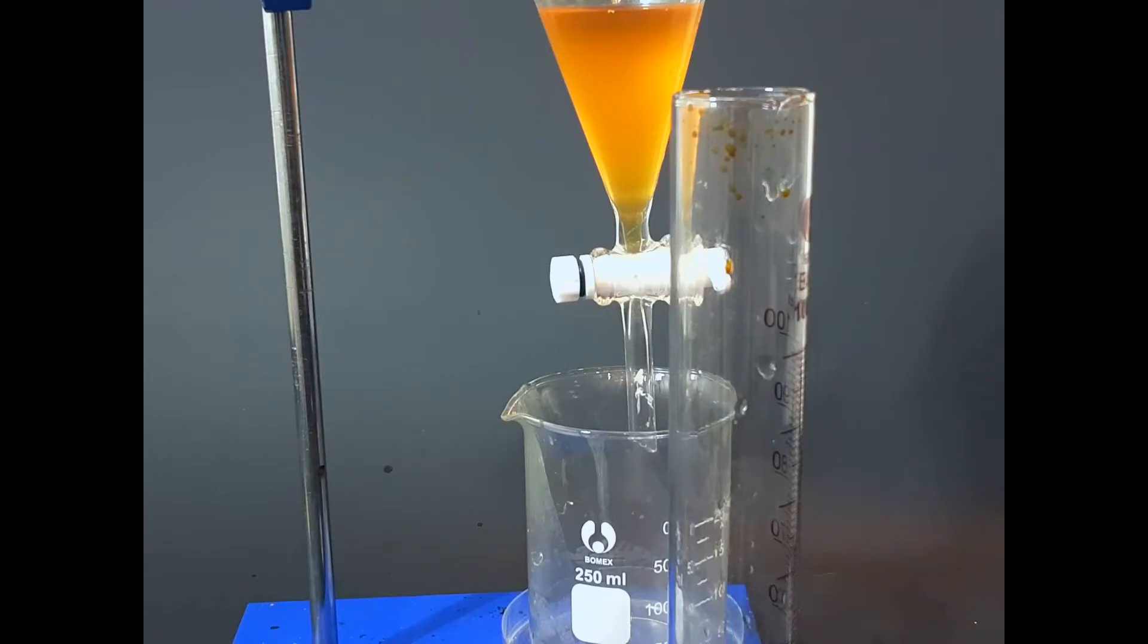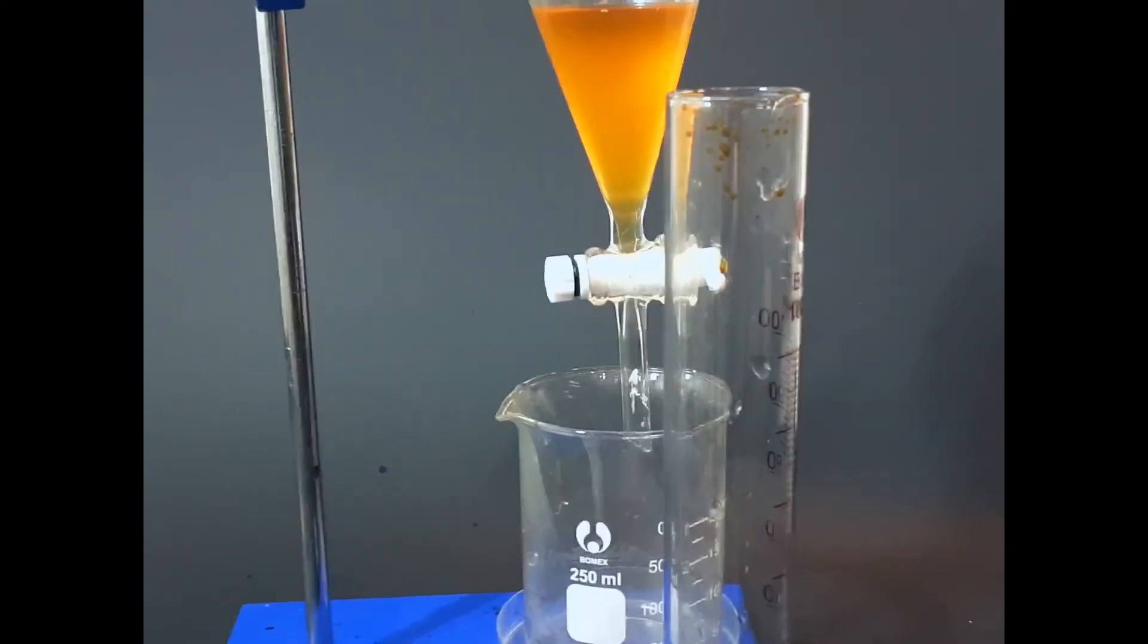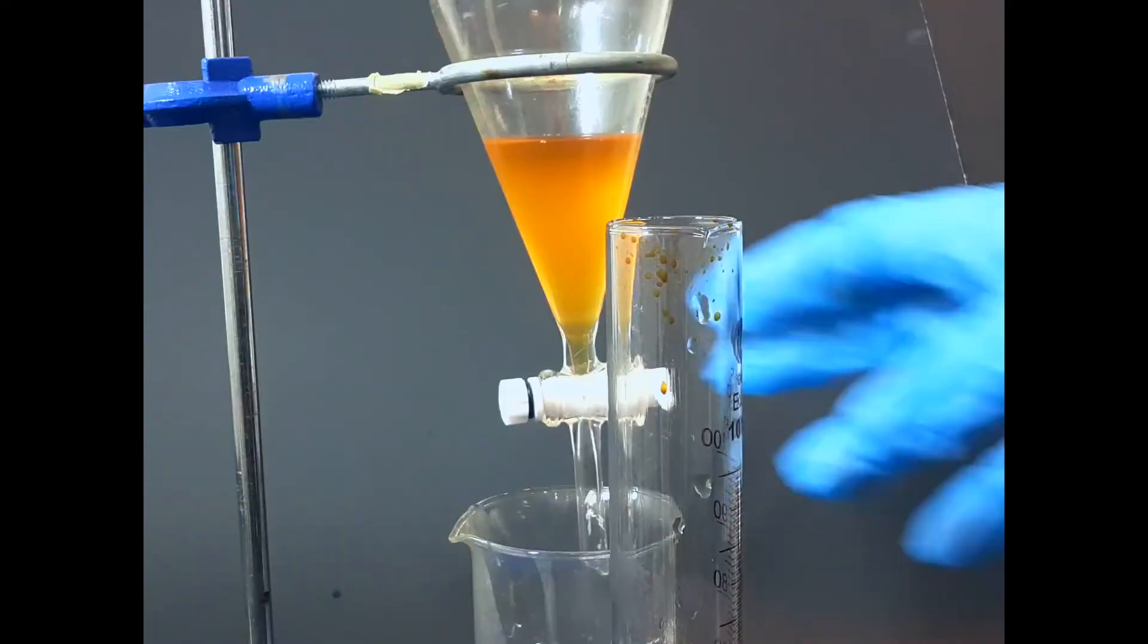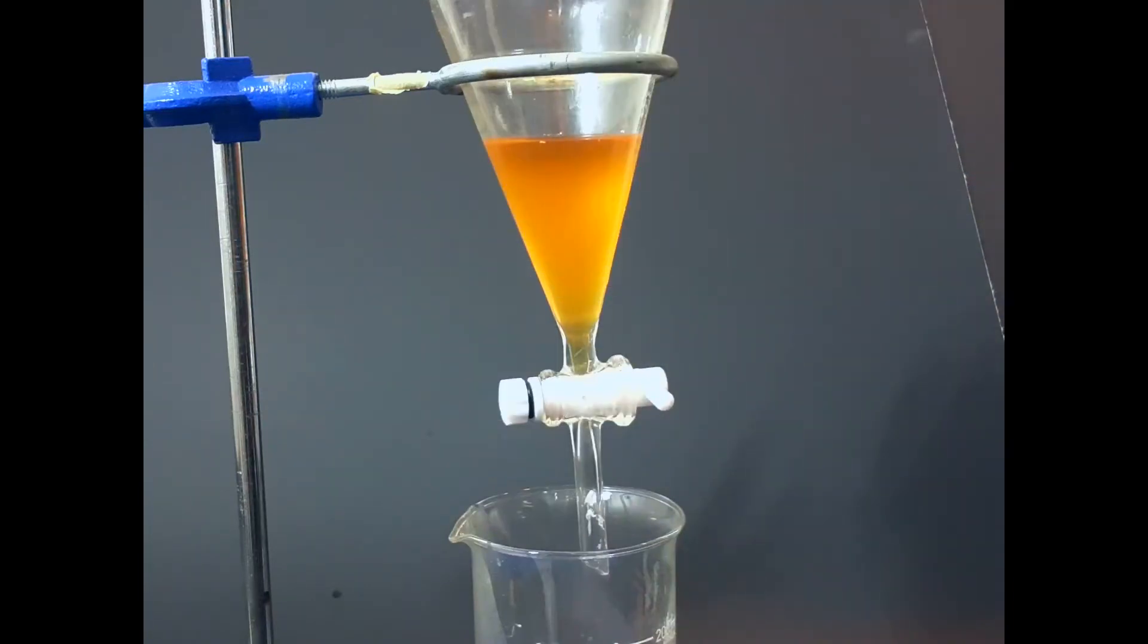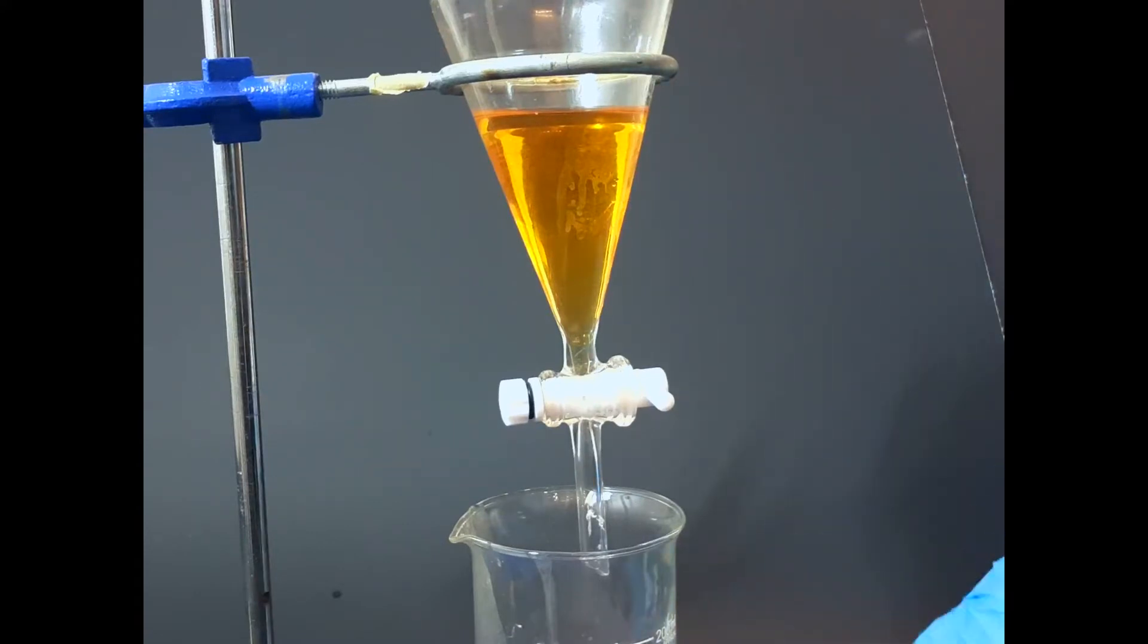I'm now starting to prepare to add the DCM. I grab a separatory funnel—you can't really see it because of the camera angle, but I do have one. I slowly pour it out, and then I kind of realize that, once again, I need another beaker because I spilled some of the DCM again.